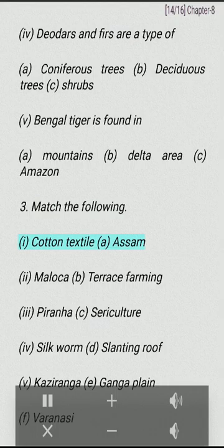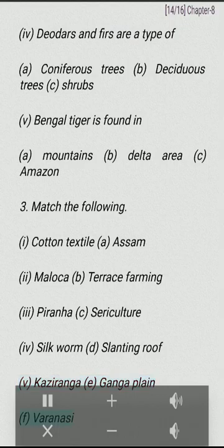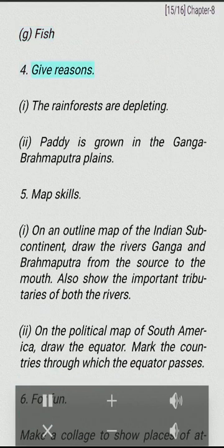Match the following: (I) Cotton textile — A. Assam. (II) Maloca — B. Terrace farming. (III) Piranha — C. Sericulture. (IV) Silkworm — D. Slanting roof. (V) Kaziranga — E. Ganga plain. (VI) Varanasi — G. Fish. Give reasons: (I) The rainforests are depleting. (II) Paddy is grown in the Ganga Brahmaputra plains.